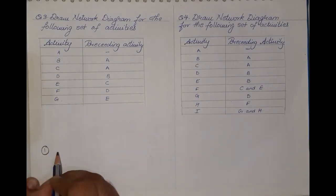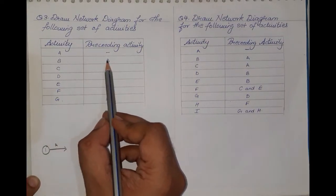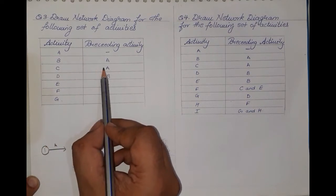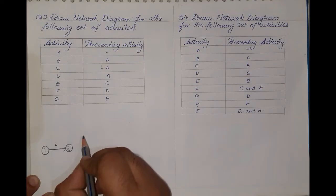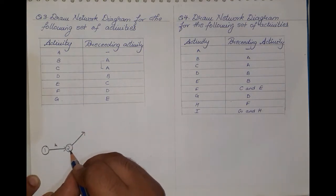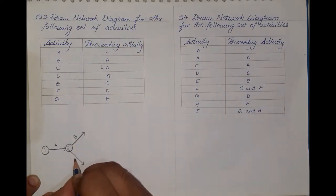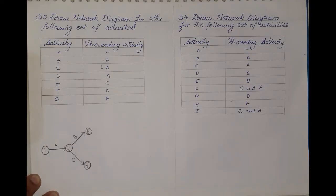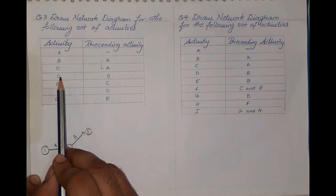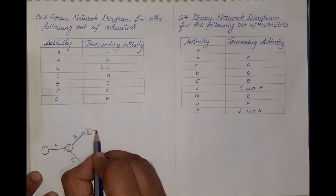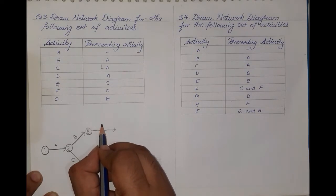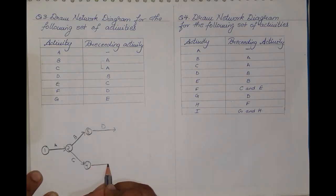Activity A has no preceding activity. Next, activity B has preceding activity A, and activity C also has preceding activity A. This means from A, two activities have evolved — from A we have activity B and activity C getting evolved. We note down B and C: this is the end point of B and this is the end point of C. From B, activity D has evolved, and from activity C, activity E has evolved.